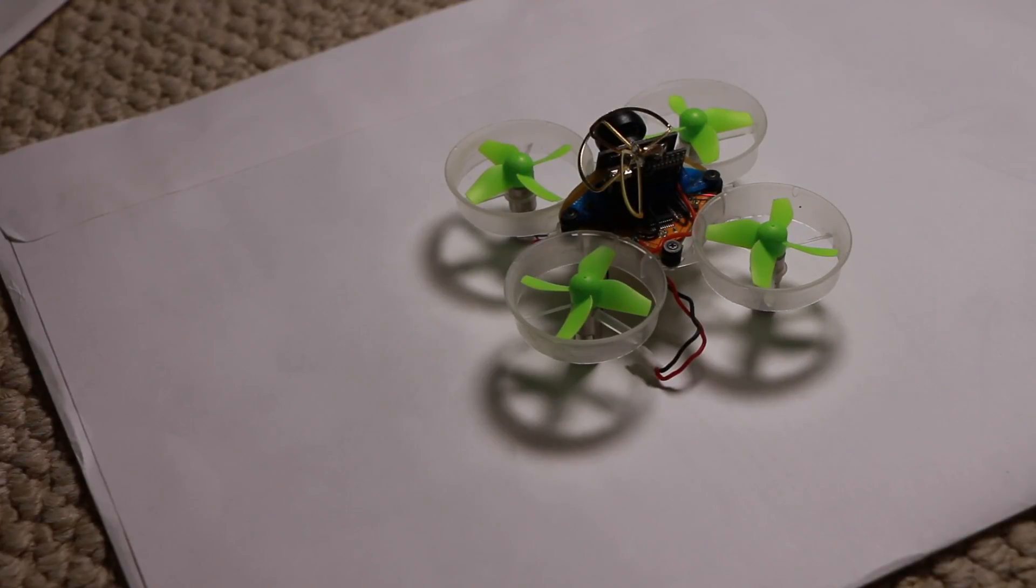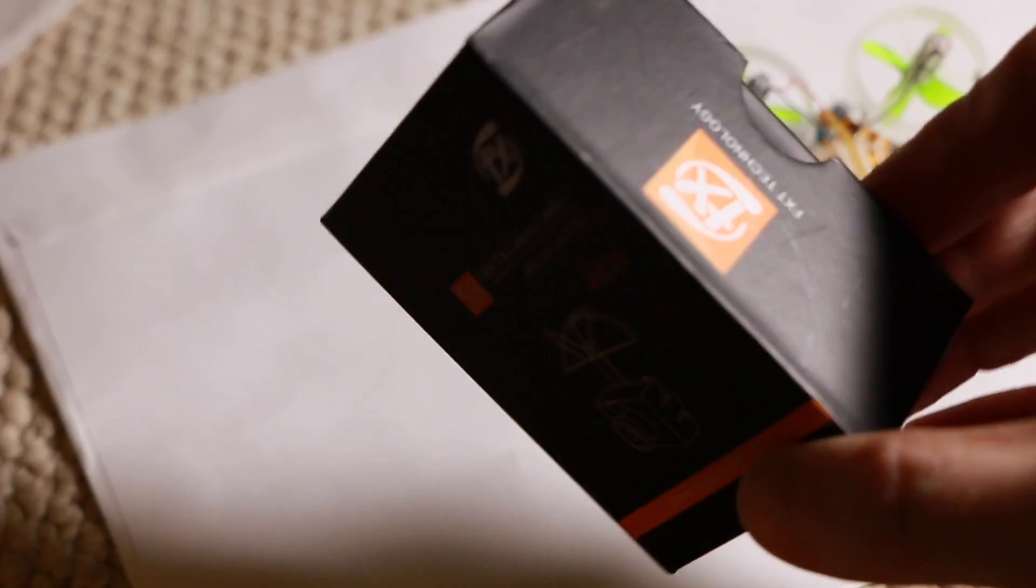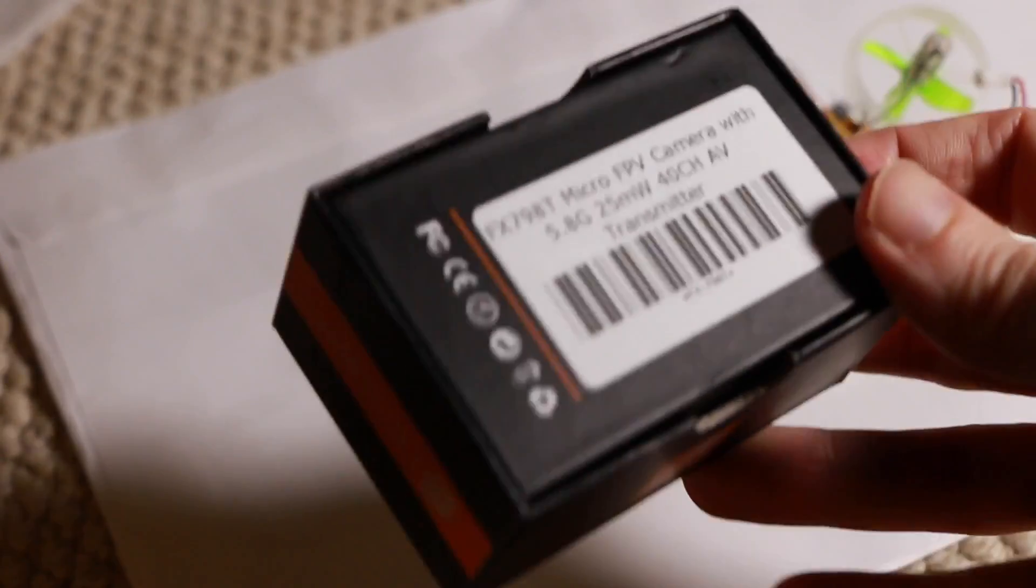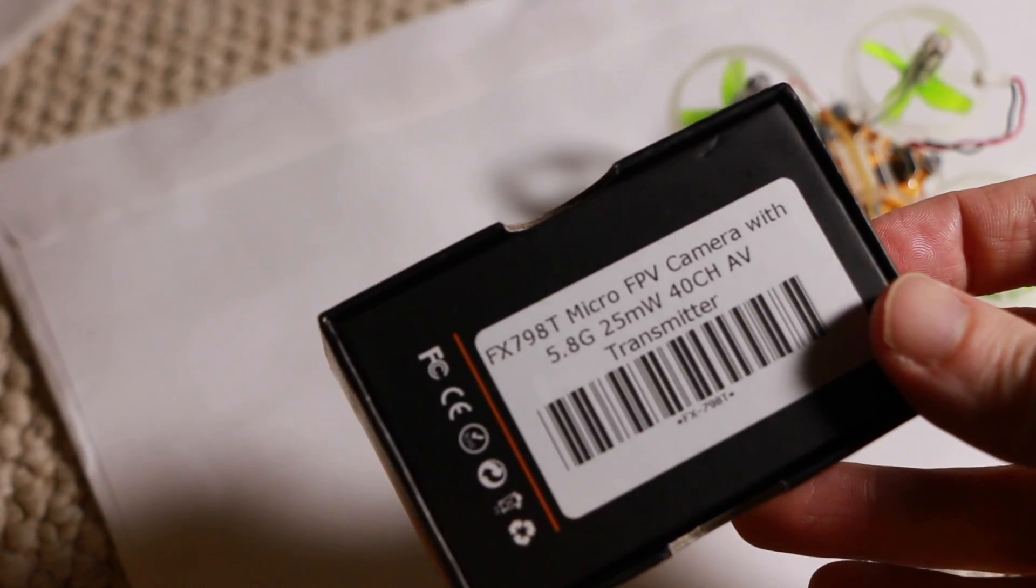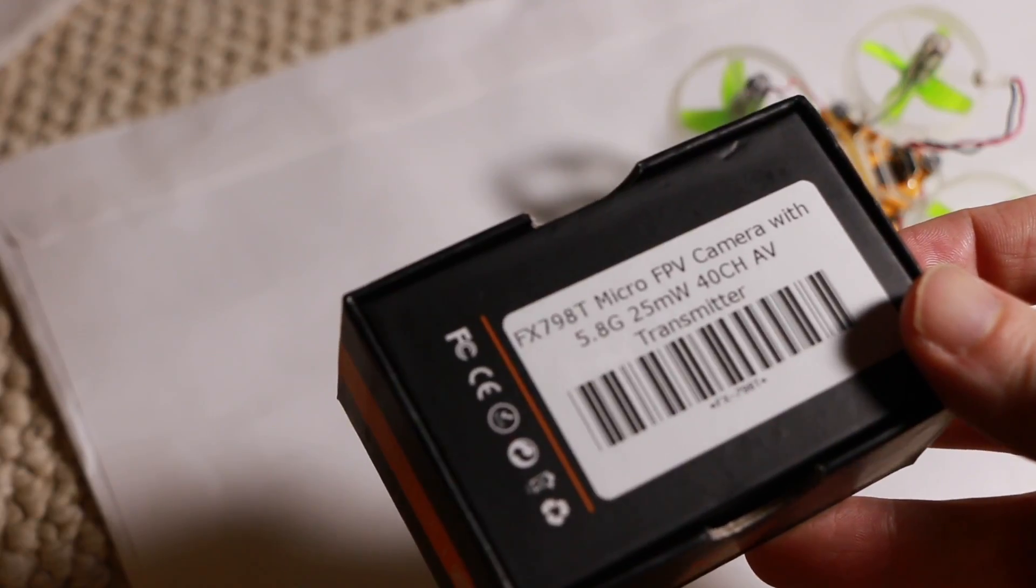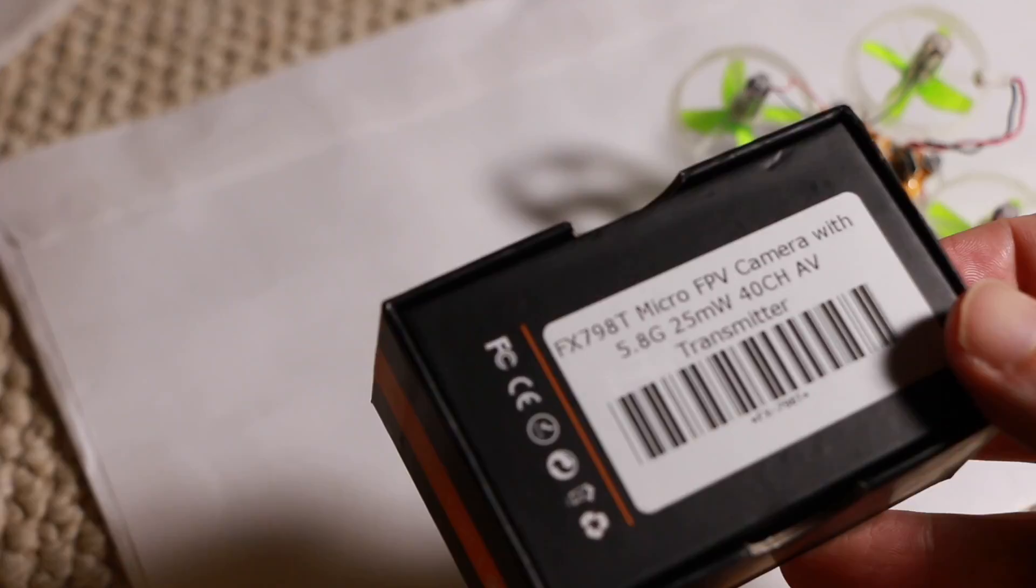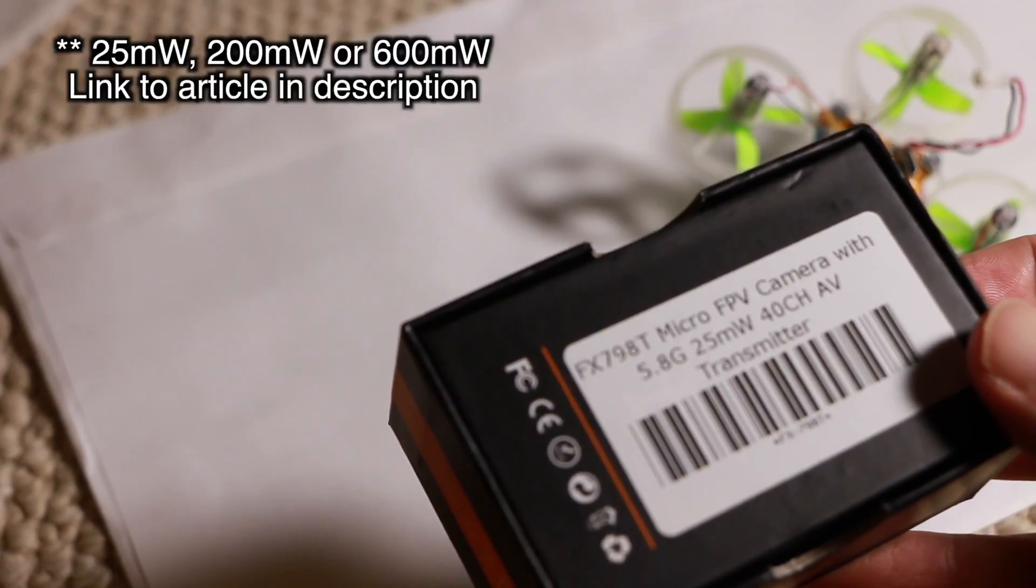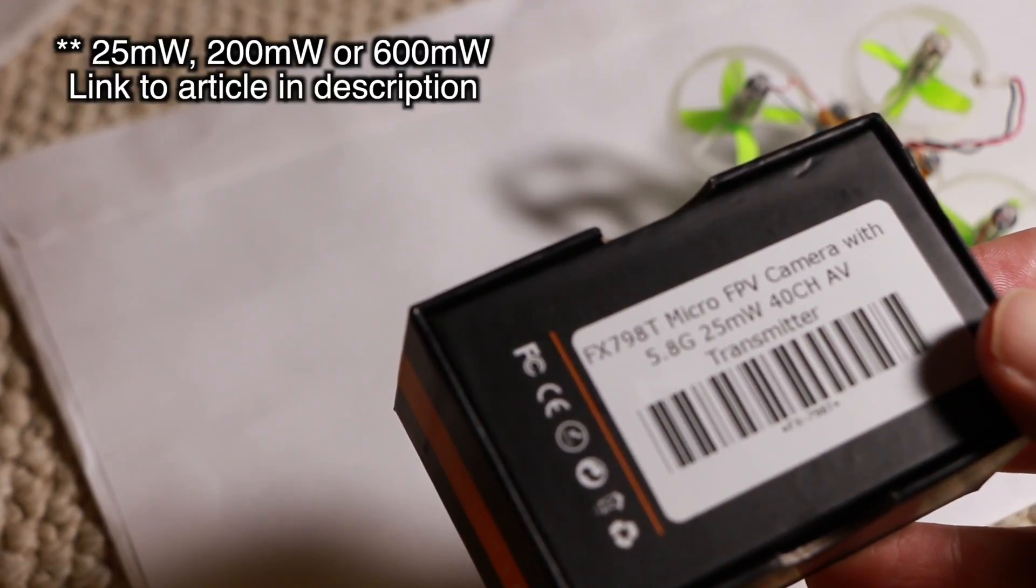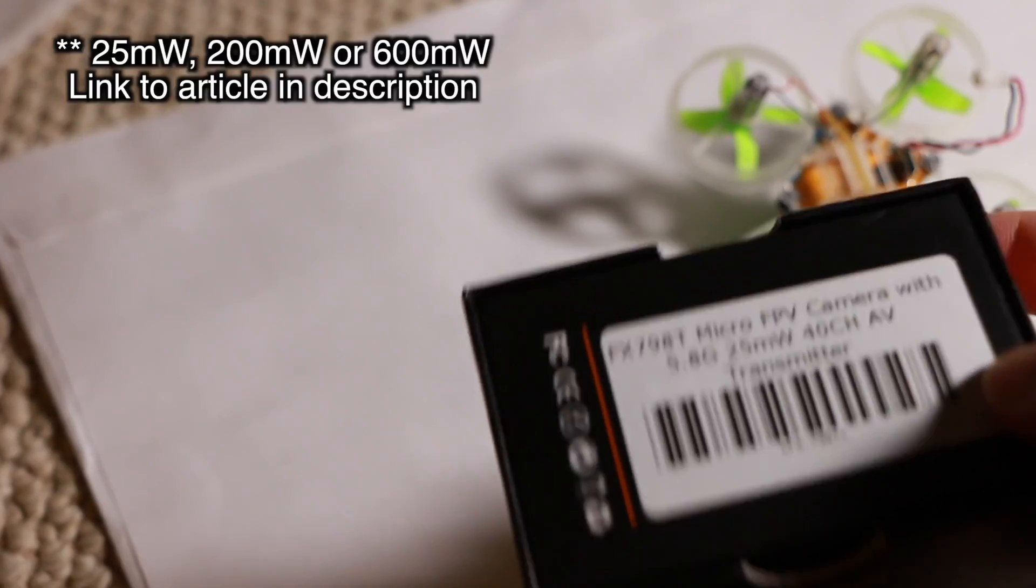So regarding a tiny whoop build, let's look at the camera. So here, the little camera is, it looks like it's an FXT. If I go to the back here, FX798T micro FPV camera. So it's 25 milliwatts. So you typically find, I believe, 25, typically 25, 250, and 600. I'll have to check that. Those are the typical settings that you'd find.